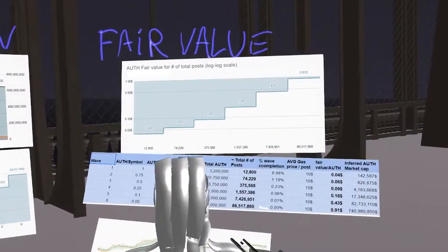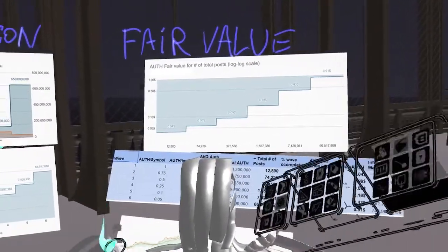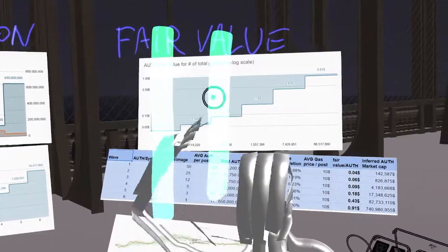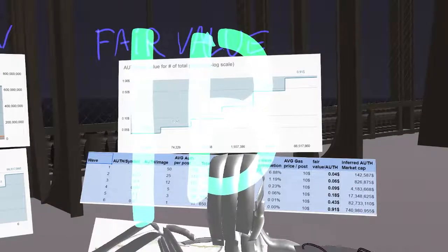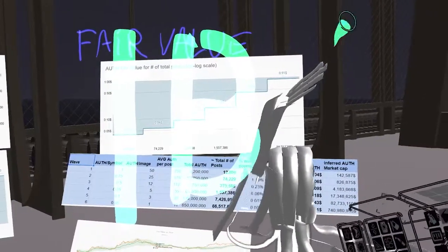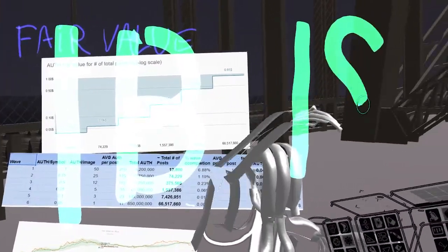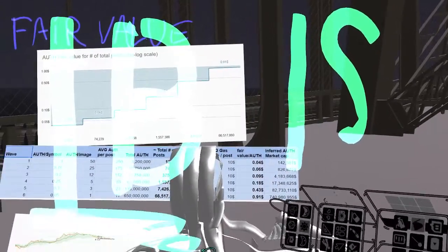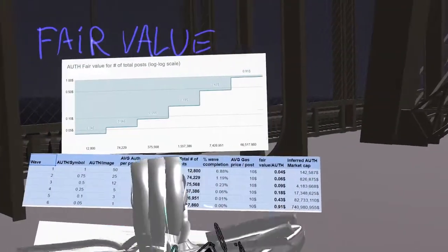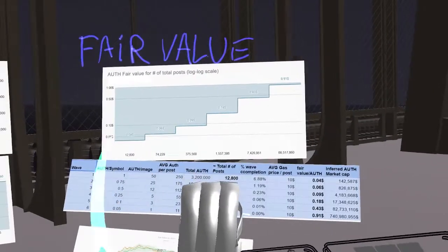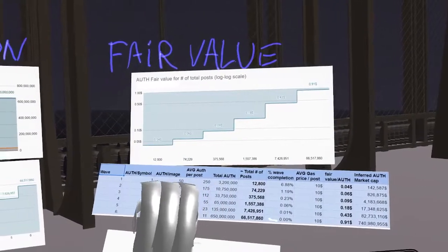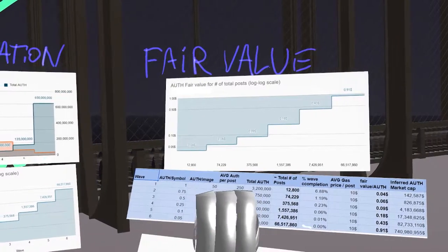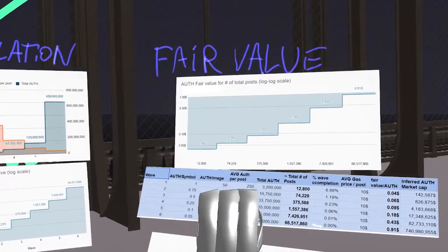One last angle that we can take is to take the top-down angle. The total supply of auth is 1 billion. It means that if we want to get to a price tag of 1 dollar, we need to get to a market capitalization of 1 billion. A market capitalization of 1 billion would place it at top 50 in the crypto projects, which is the spot the project Zcash is holding at the moment.